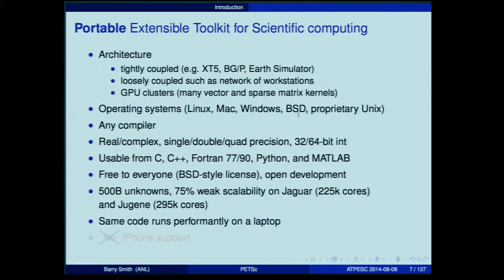We also have a quad precision that works with GCC and GFortran, which is very useful if you're working with problems that are very ill-conditioned. When you have a problem with a condition number of 10 to the 12th — which we're starting to see more of as people do really multi-physics calculations — you can trivially build and run everything with quad precision and see whether round-off or precision is hurting your problem.